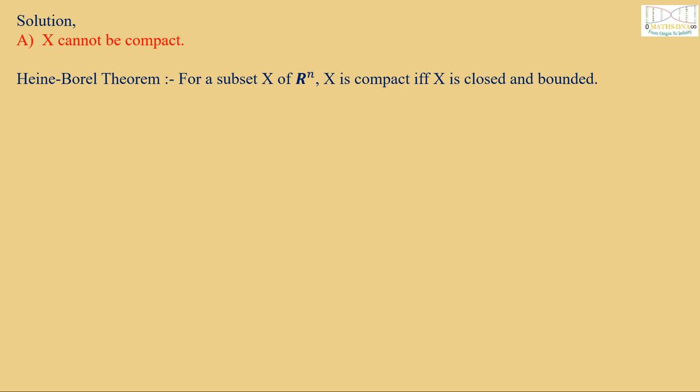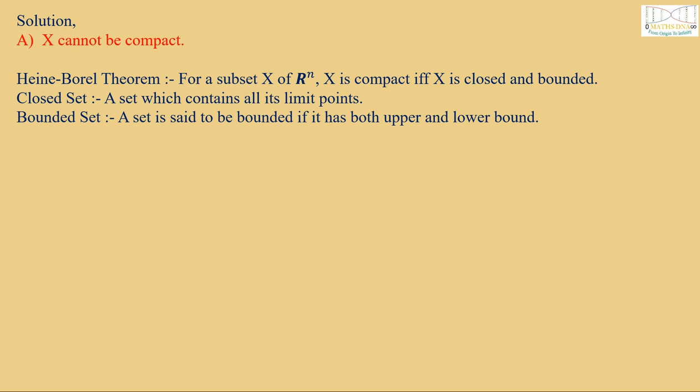We have Heine-Borel theorem which says that for a subset X of R raised to N, X is compact if and only if X is closed and bounded. Closed set means a set which contains all its limit points. And bounded set means a set is said to be bounded if it has both upper and lower bounds.